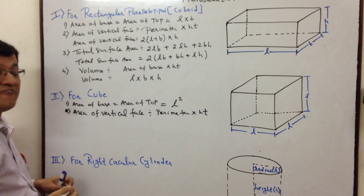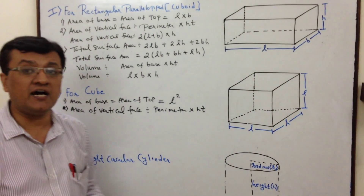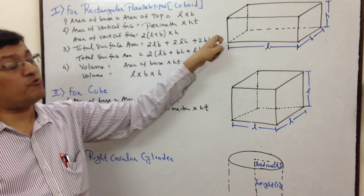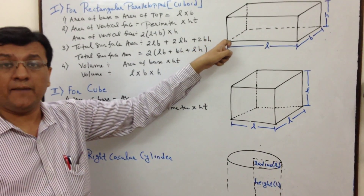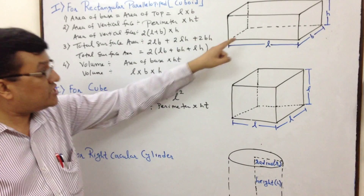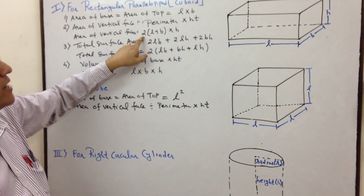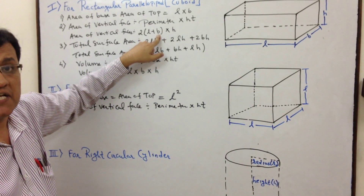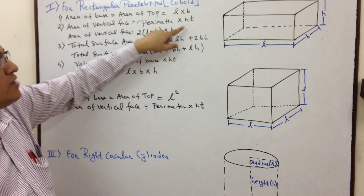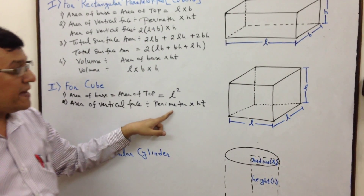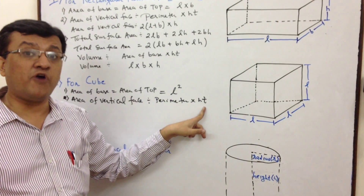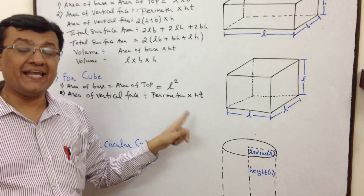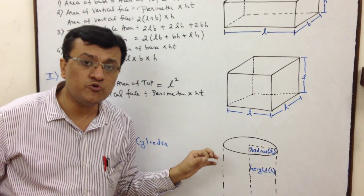We can also correlate with the rectangular parallelepiped formula. There, area of base and area of top was length into breadth — two different dimensions. Here, applying the same concept: length into breadth, but length is L and breadth is also L, so it gives L into L, which is L squared.